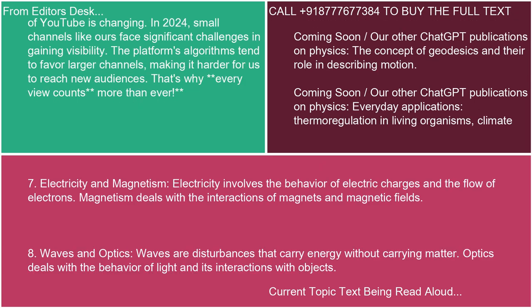7. Electricity and Magnetism. Electricity involves the behavior of electric charges and the flow of electrons. Magnetism deals with the interactions of magnets and magnetic fields.